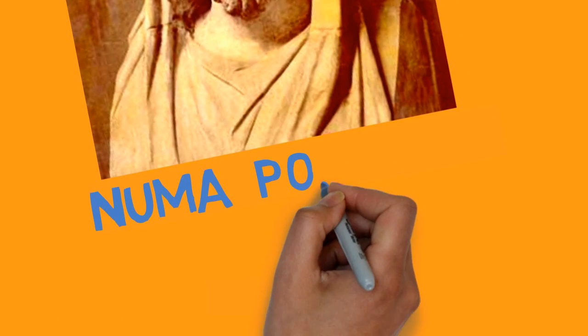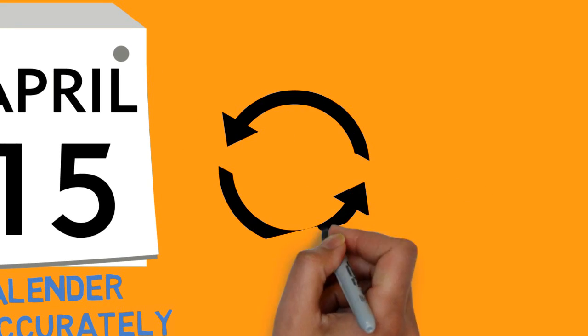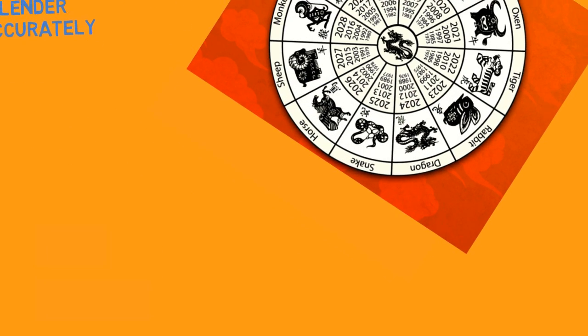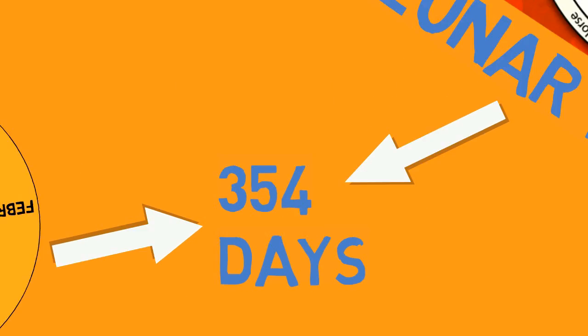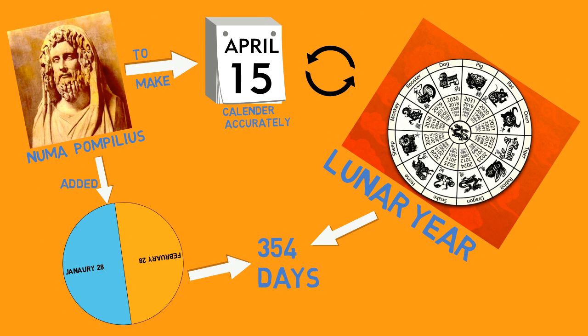The second king of Rome, Numa Pompilius, decided to make the calendar more accurate by syncing it with the actual lunar year. This is when January and February came into the picture. Numa added two months — January and February — after December. The new months each had 28 days, totaling the year with 354 days.